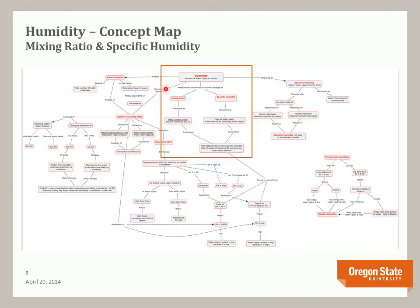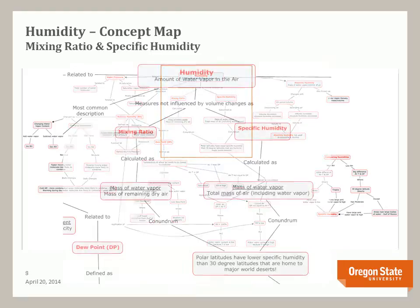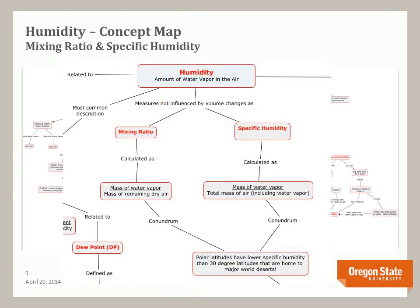Next we look at mixing ratio and specific humidity. Unlike absolute humidity, which is affected by volume changes, both the mixing ratio and specific humidity are ratios dependent on mass, not volume. Specific humidity is calculated as the mass of water vapor divided by the total mass of the air including the water vapor, measured in grams per kilogram. The mixing ratio is the mass of water vapor divided by the mass of the remaining dry air, also measured in grams per kilogram. Both increase with increasing water vapor. A conundrum: polar air has a lower specific humidity than air at 30-degree latitudes — the home of major deserts. Why is that?